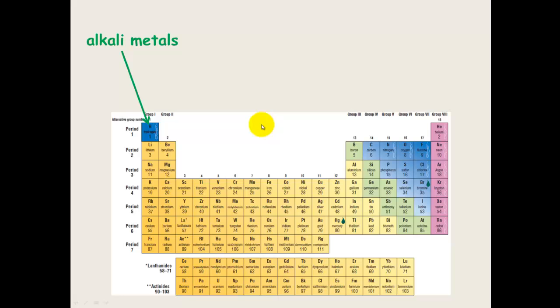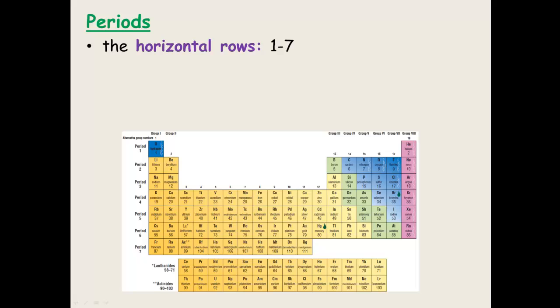They have certain names, these groups, that are recognised around the world. Group 1 are known as the alkali metals. Group 2 are the alkaline earth metals. Group 7 are known as the halogens and group 8 are the noble gases.